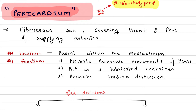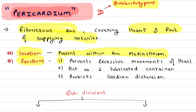Pericardium is a fibroserous sac covering the heart and roots of the supplying arteries. It is present within the mediastinum.